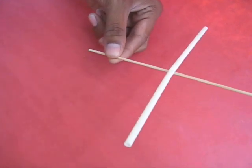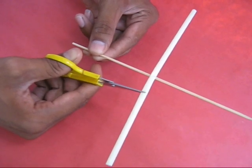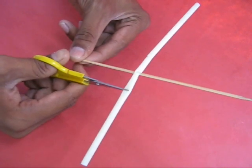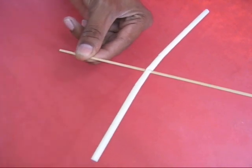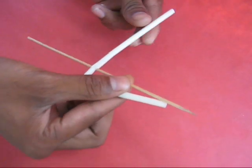With scissors, make half cuts first on the left and then on the right on the lines. Fold these cut arms in the shape of a triangle.